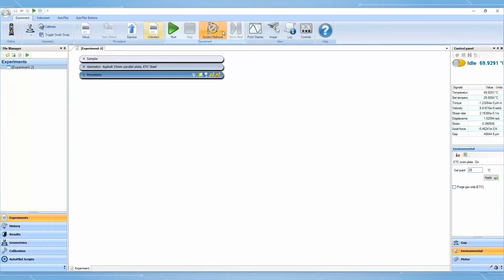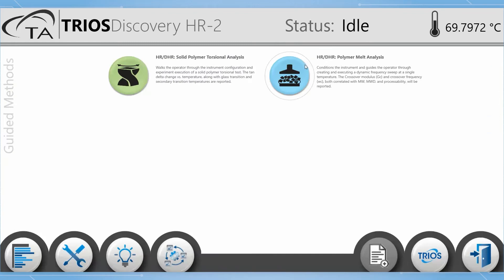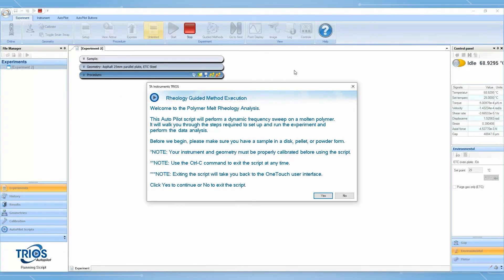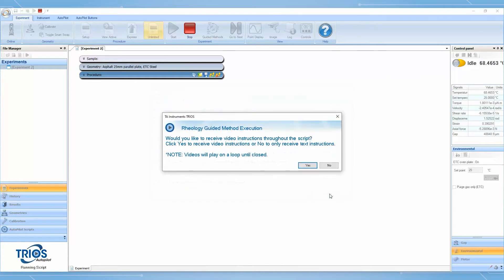In this Tech Tip, we will walk through the features of the DHR Polymer Melt Guided Method. With Guided Methods, Trios provides a simplified user interface and an instructional framework to reduce training time, mistakes, and user-to-user variability.